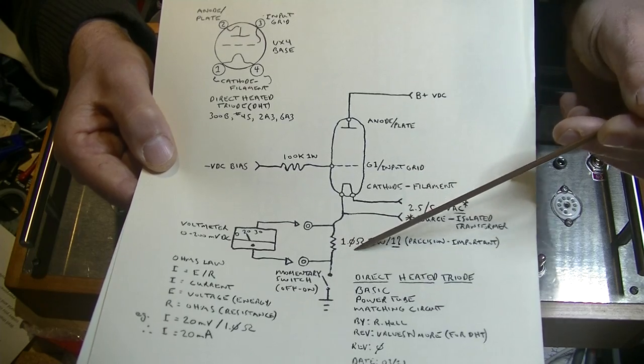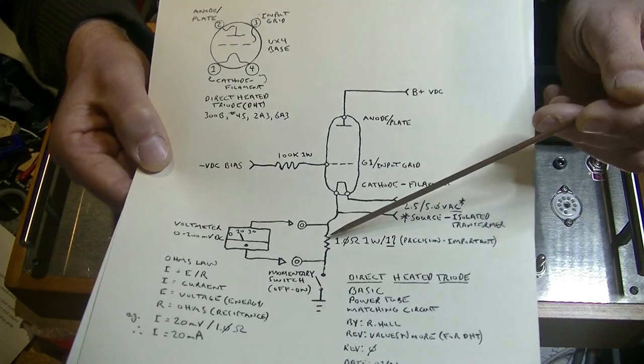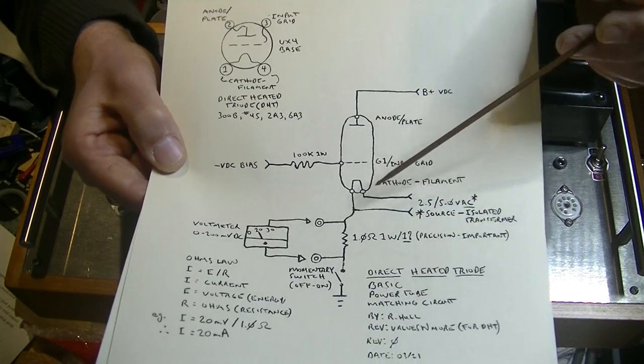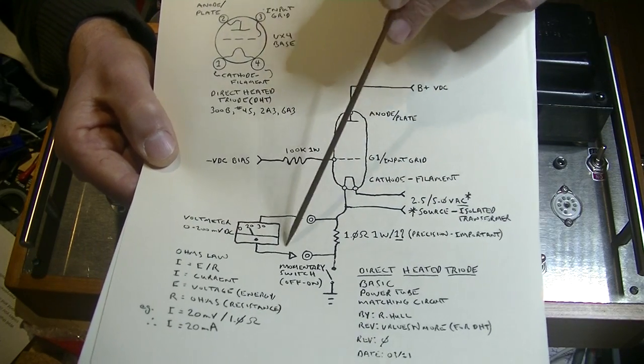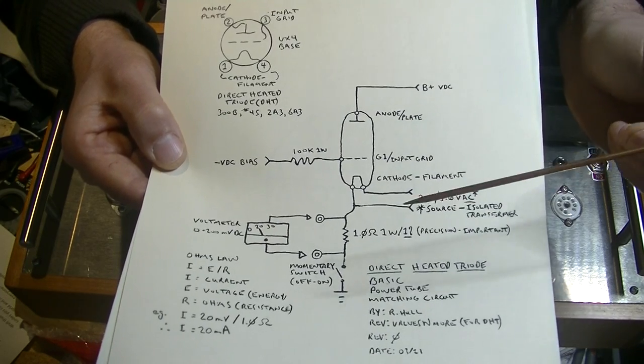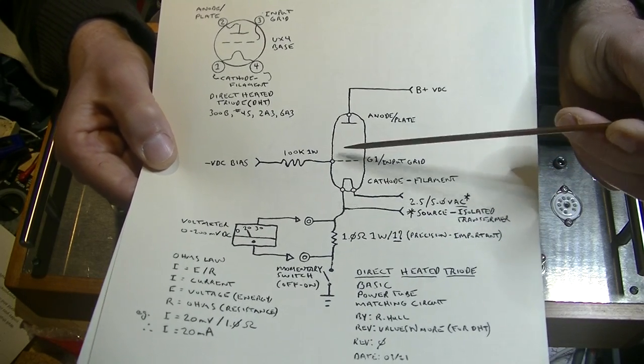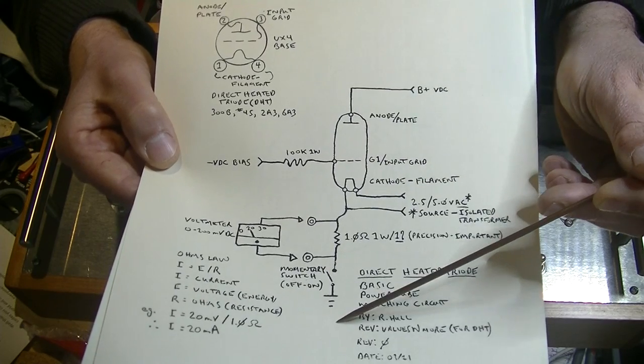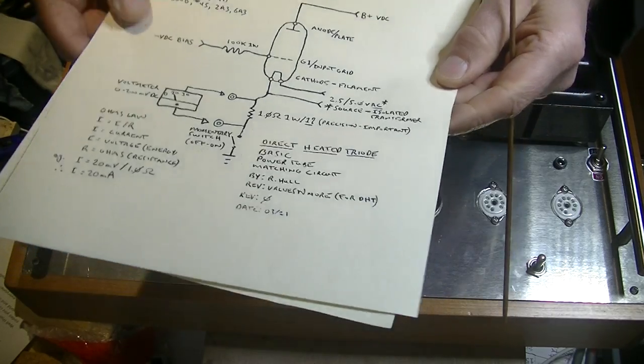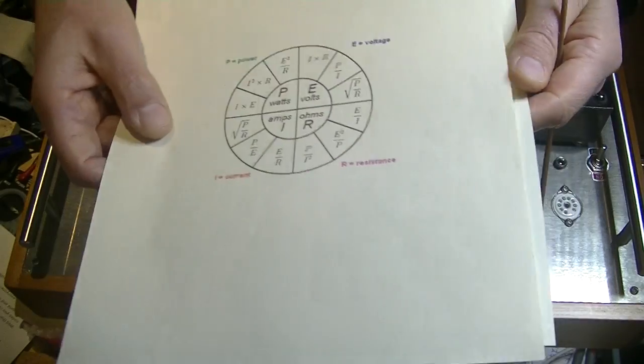Now we've got a resistor here, one ohm, one watt precision, one ohm resistor. We've got taps on either side and we've got our little voltmeter over here to take a reading. Now we're going to use Ohm's law to find out what the current is that's passing through this tube. Now it's dead easy. Let me just go and grab Ohm's law here for a second.